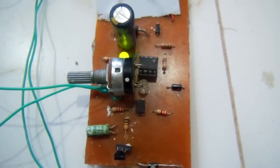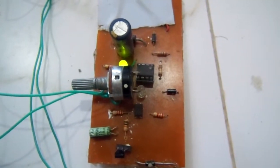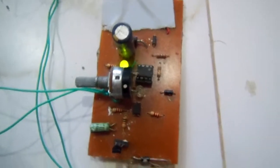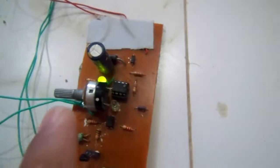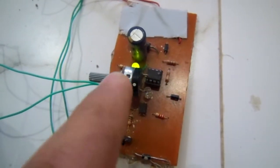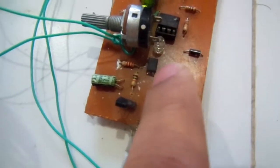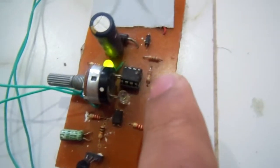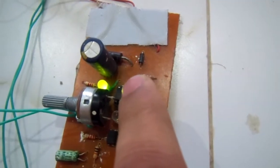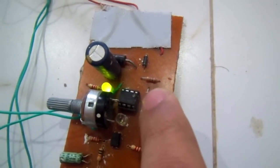Bismillahirrahmanirrahim. This is an automatic plant watering system. In this circuit we have used a potentiometer as a variable resistor and an optocoupler transistor. The operational amplifier IC 741 has been used as the main component.